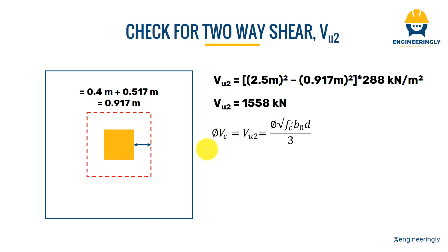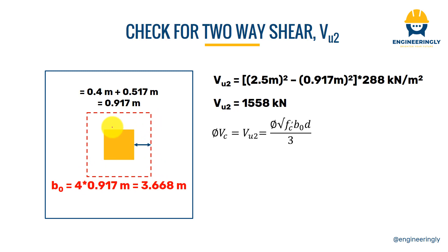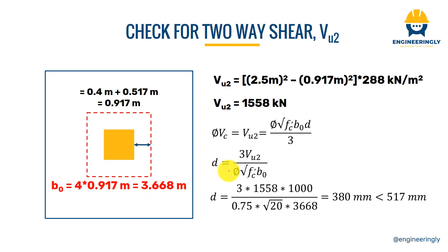Using the ACI formula for punching shear, the required depth d is calculated to be 380 millimeters. Since we have provided 517 millimeters, the two-way shear check is also satisfied. We can now proceed to calculate the bending moment for steel bar design.